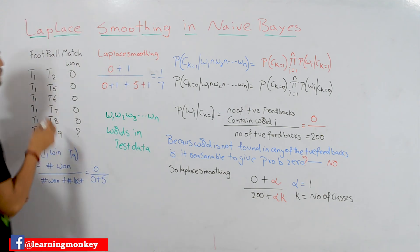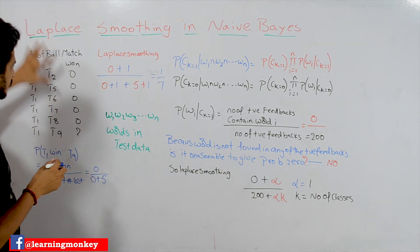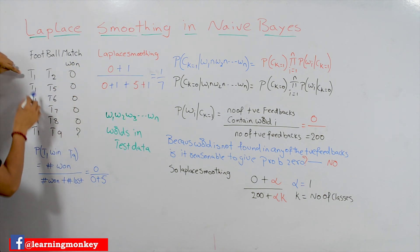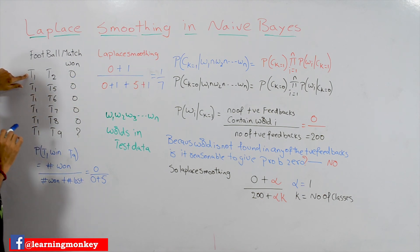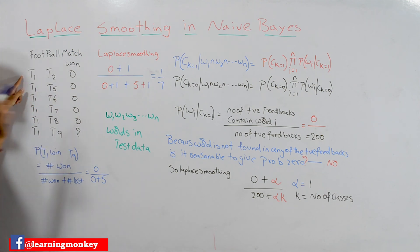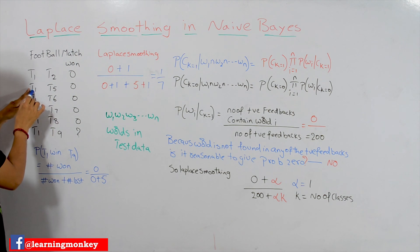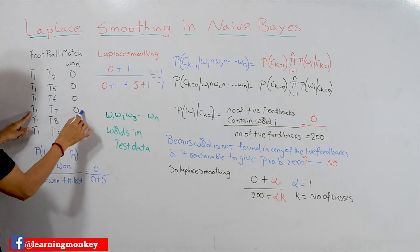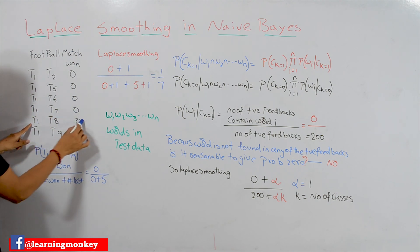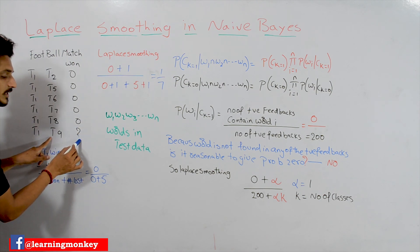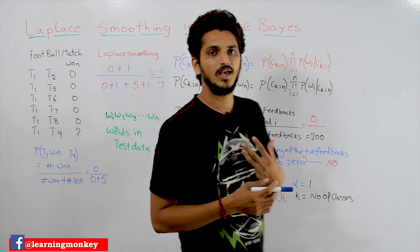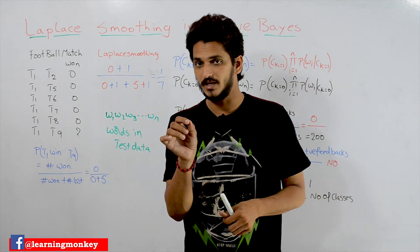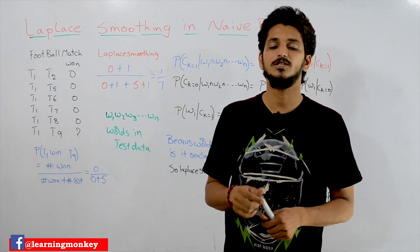Let's take a football match as our dataset. T1 is a team that played with T2 and lost the game — zero means it lost. T1 played with T5, T6, T7, and T8 and lost all those games. Now T1 is playing with T9. What is the probability that T1 will win against T9? That is what we have to identify.